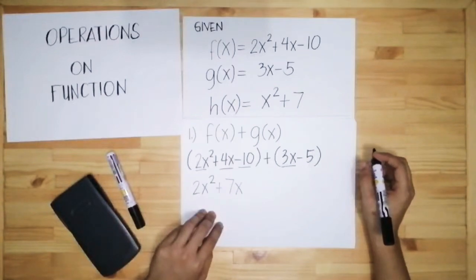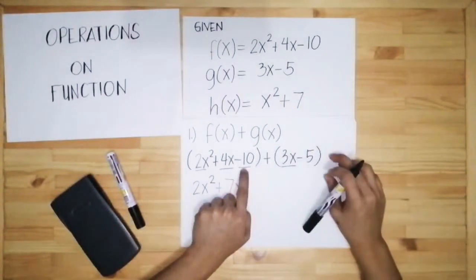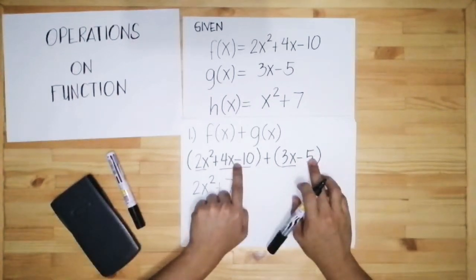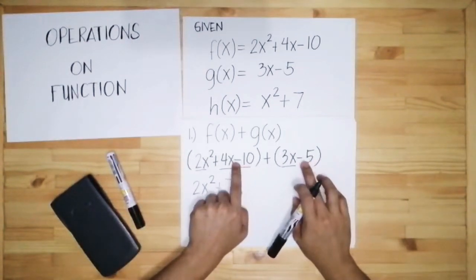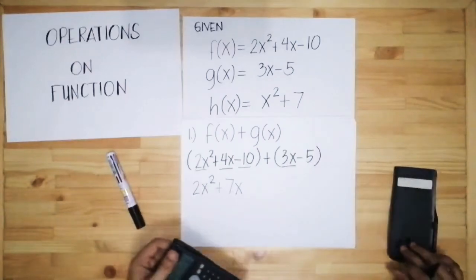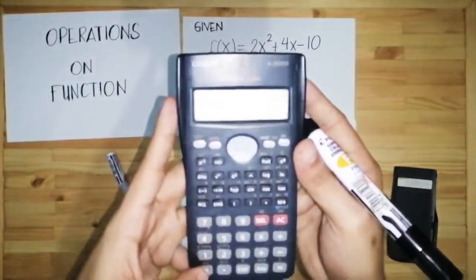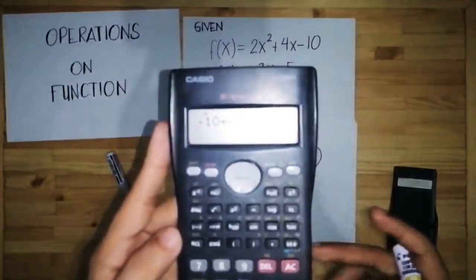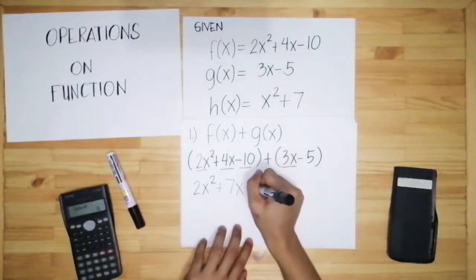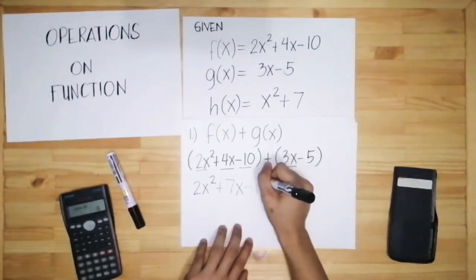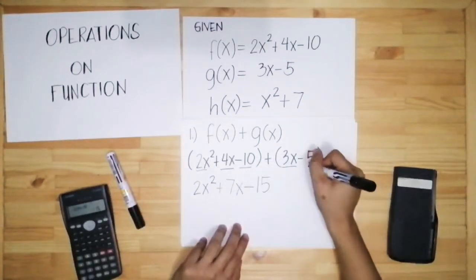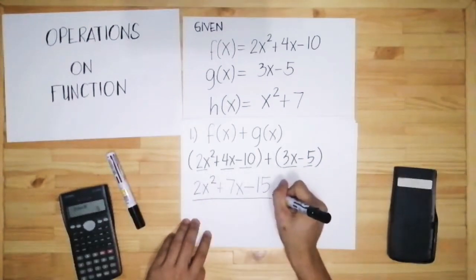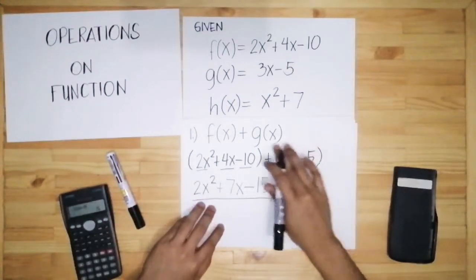Next, we have the constant negative 10. We check the other parenthesis for a constant — we have negative 5. Since both are negative, we add them: 10 plus 5 is 15, so the result is negative 15. So when you combine all terms, 2x squared remains as is since it has no similar term. The final answer is 2x squared plus 7x minus 15. That's how you do addition.